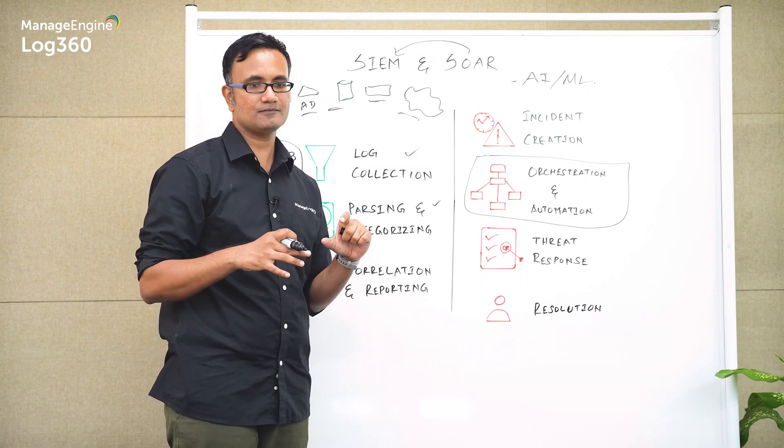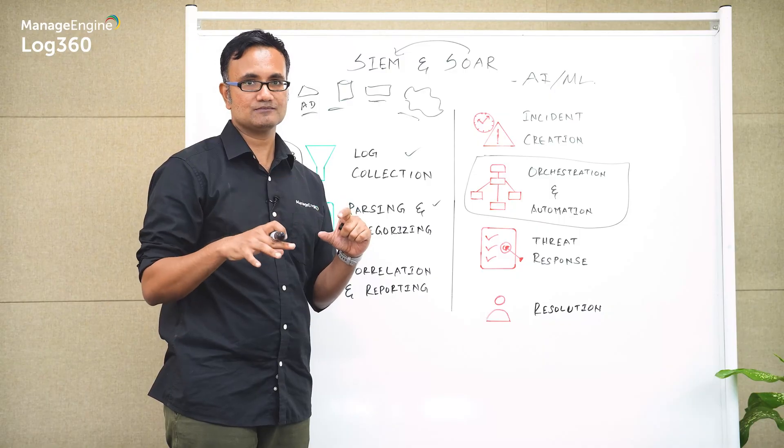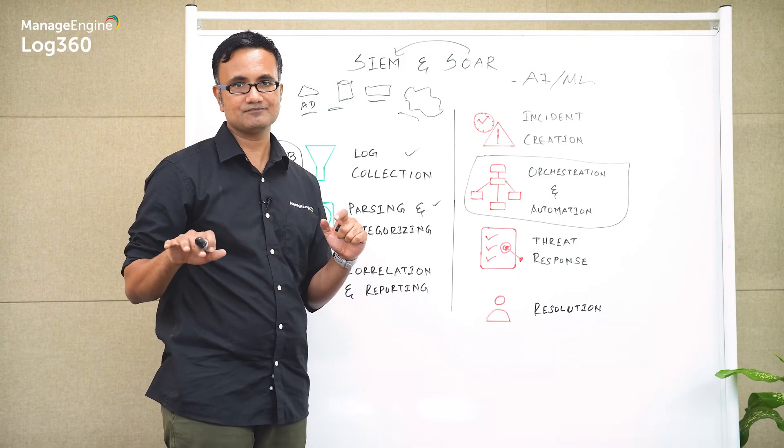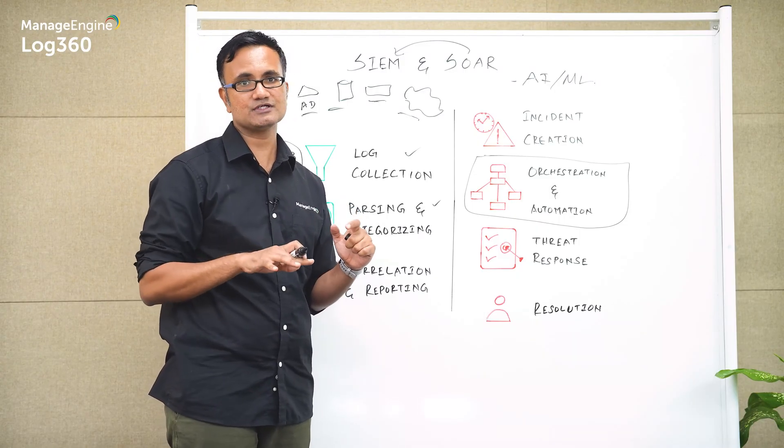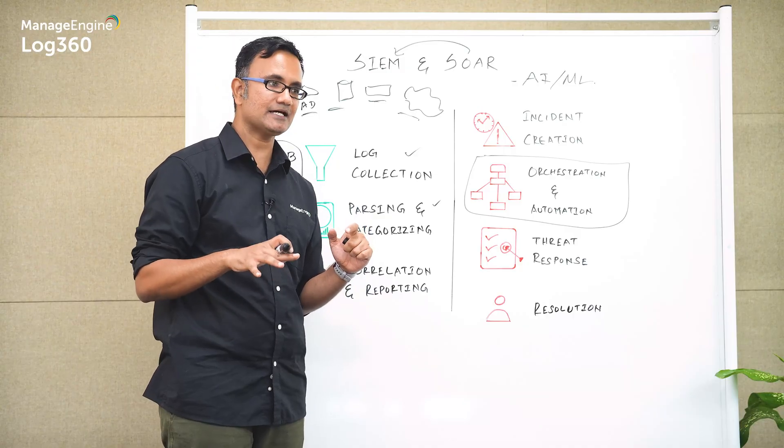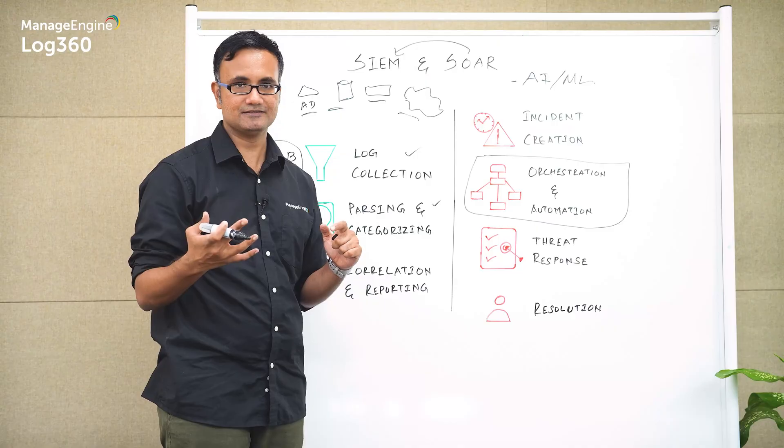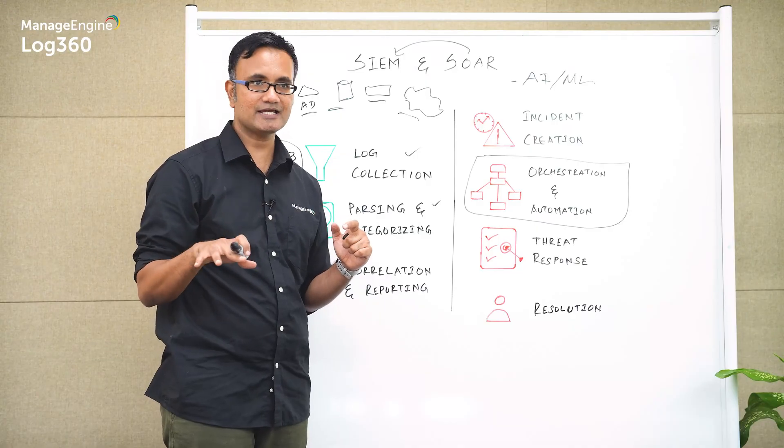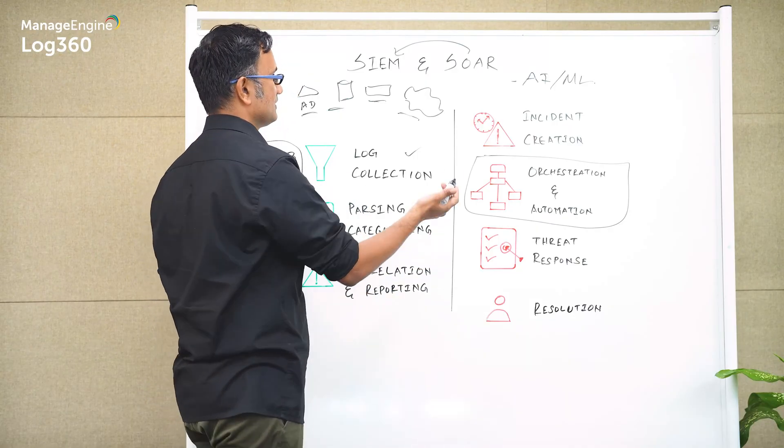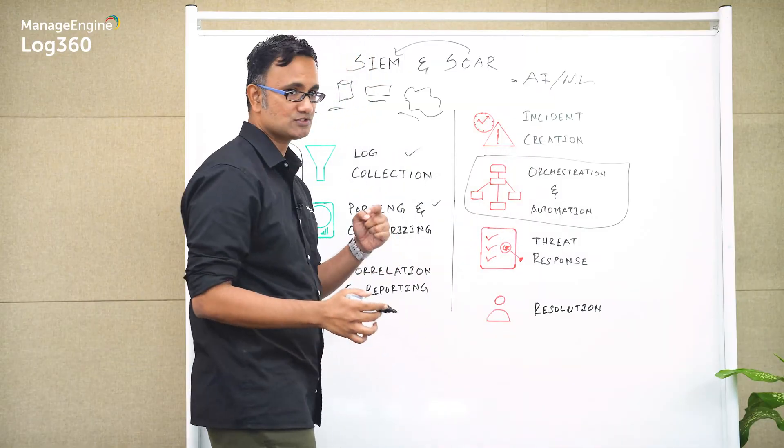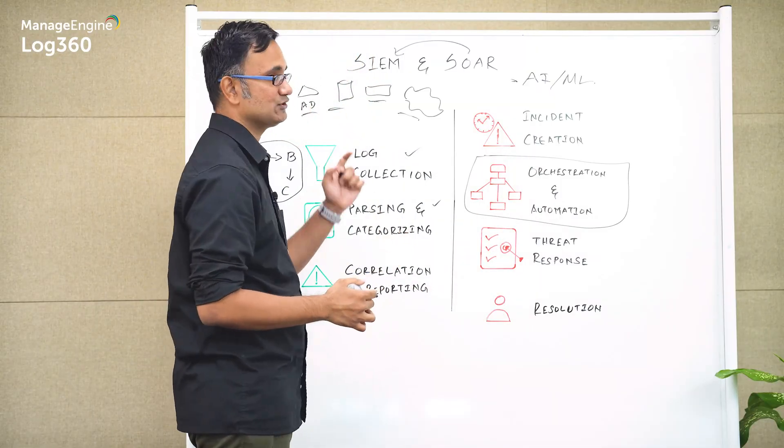And the way it looks for anomalies is it looks for things that are out of the normal. So a baseline of expected activity is set for every user and entity within the network, and any time an activity gets performed that goes beyond what is expected from that particular baseline, it gets tagged as an anomaly. So that is how AI and ML is being used—a very, very critical capability to have within your SOAR.